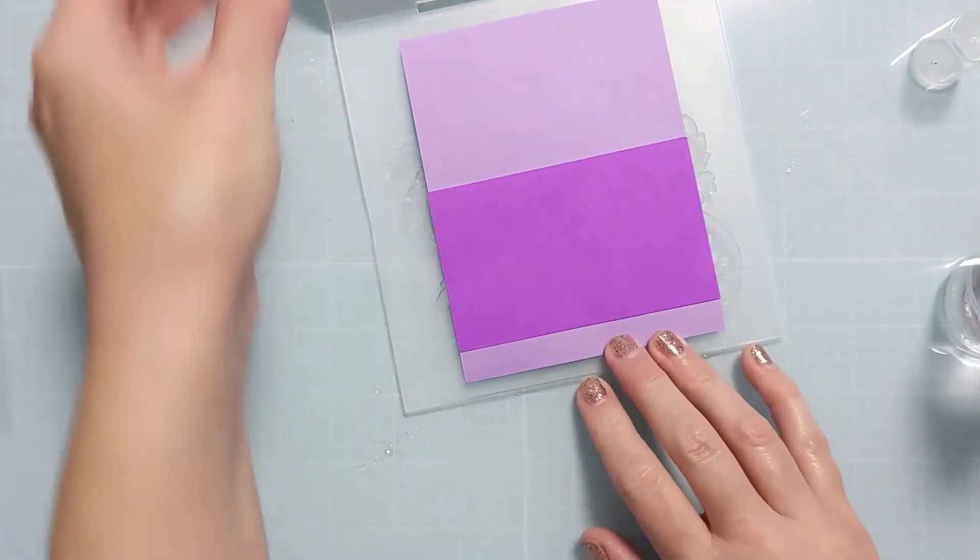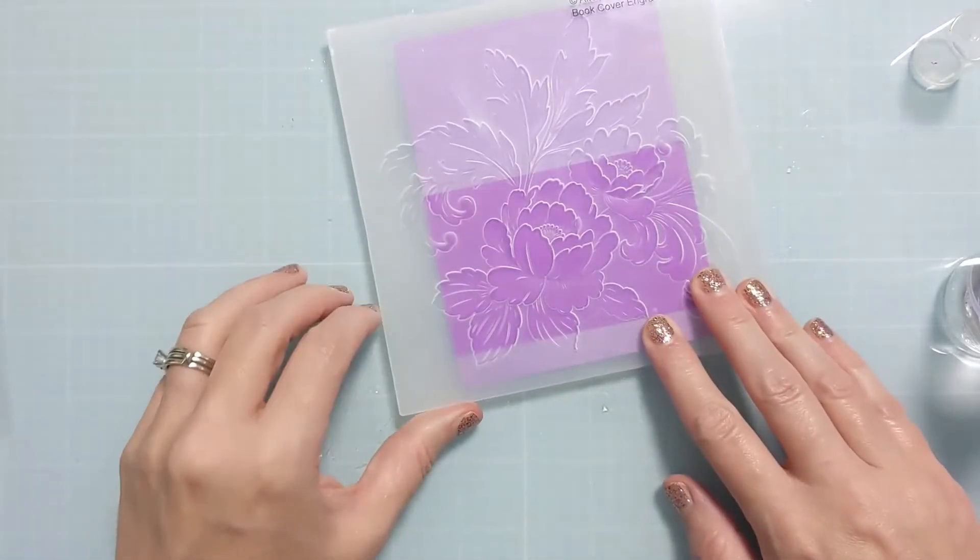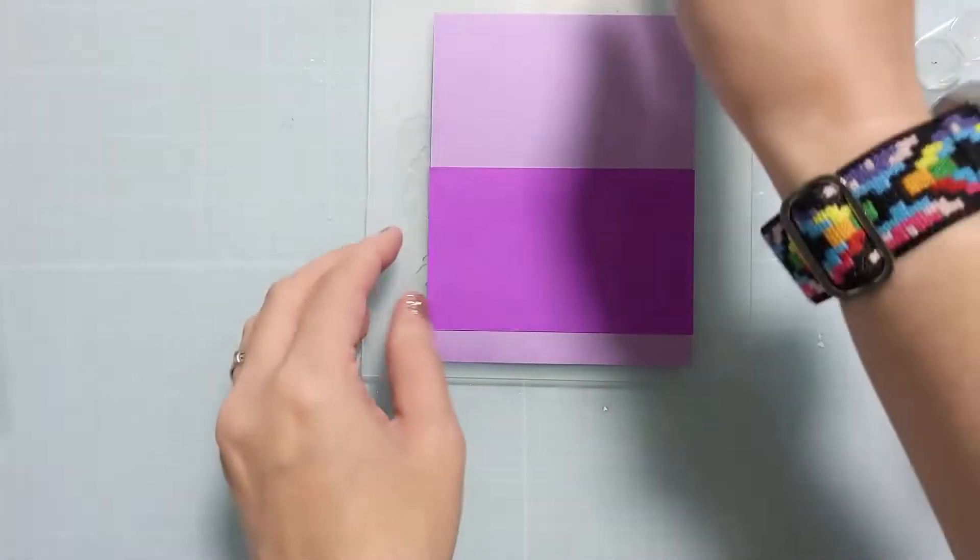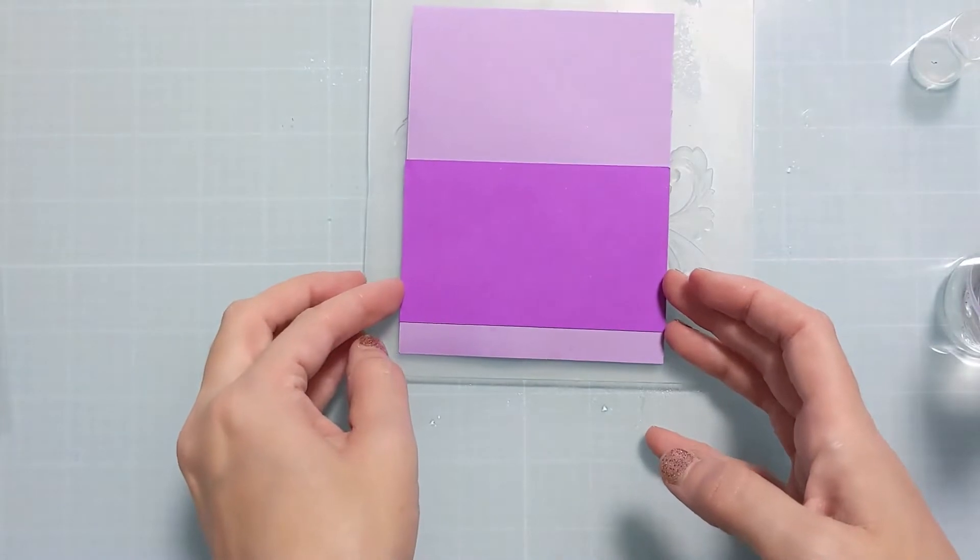So I'm just kind of closing the top of it just to see where it's going to put the image on the cardstock and I'm just maneuvering it around to figure out exactly where I want it to go.